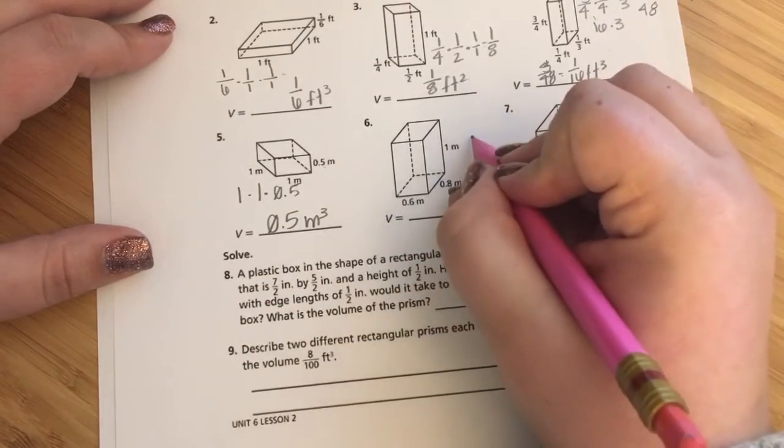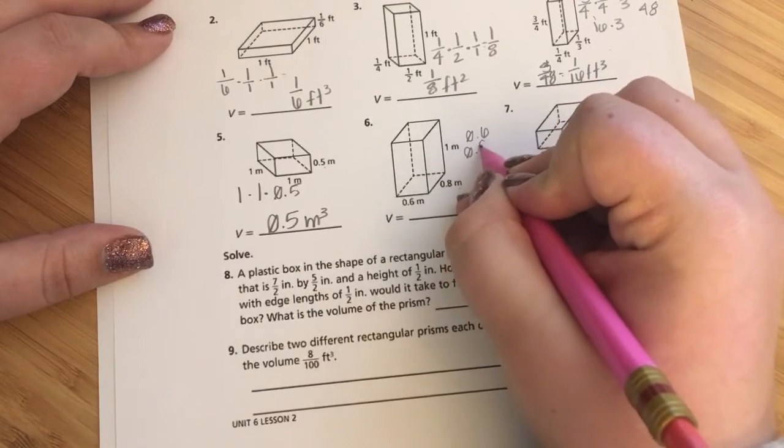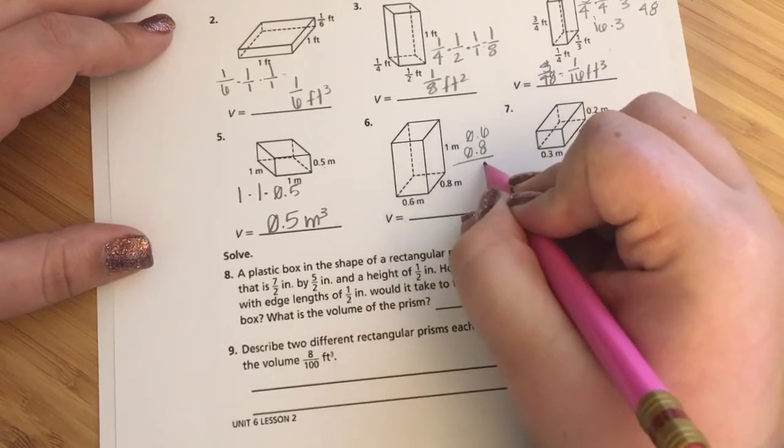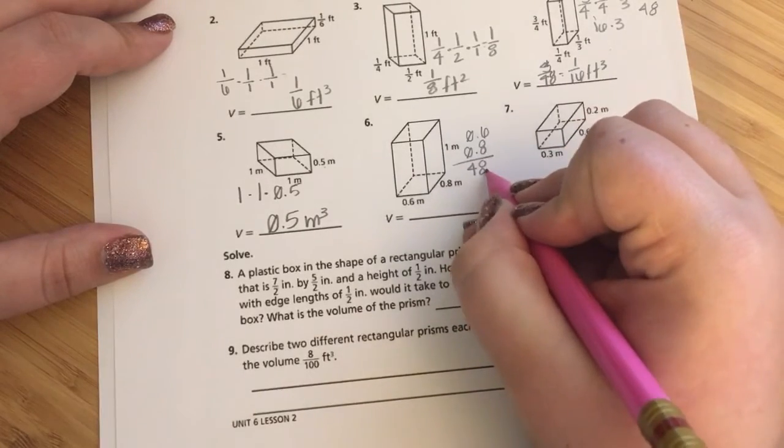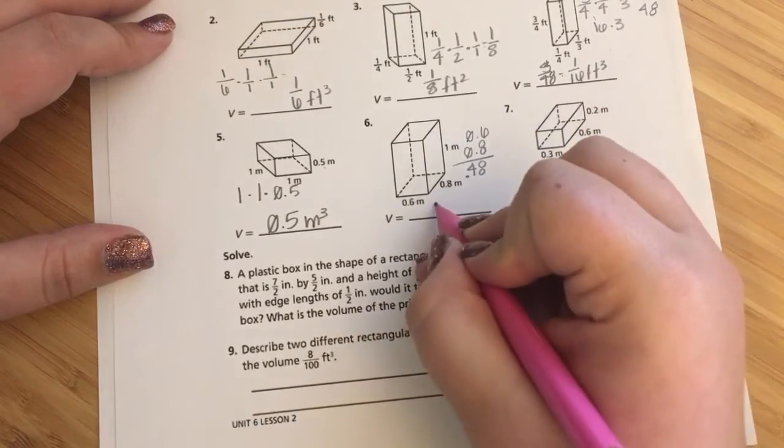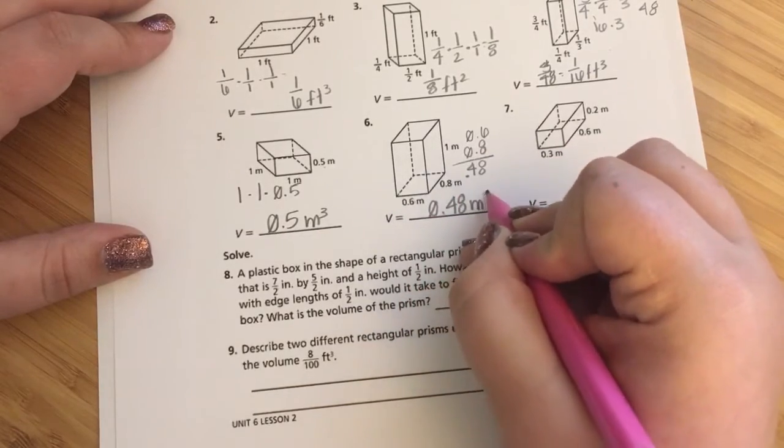0.6 multiplied by 0.8 by 1. I really just need to focus on the other decimals. So, this is 0.48 meters cubed.